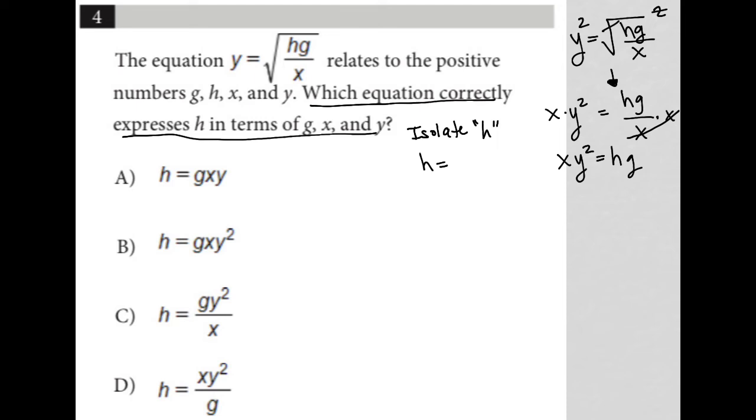And then lastly, I'm going to divide both sides by g so that I get rid of the g away from the h and therefore isolate the h. I'm going to just move the h into the front here and move it to the left. So I'm going to say h is equal to xy squared, not x squared, xy squared over g.